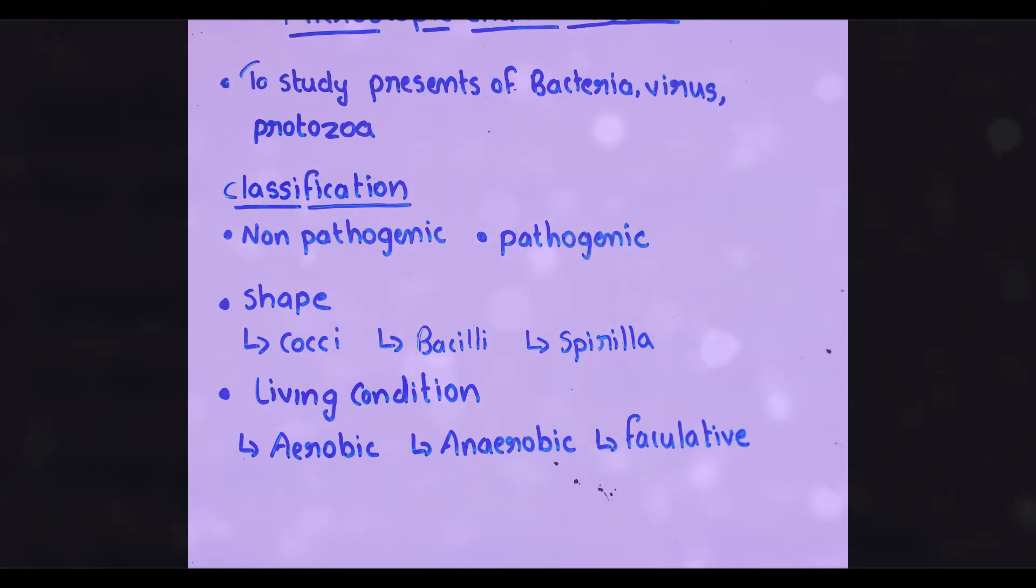Next classification is based on shape. First is Cocci - sphere shaped bacteria. Second is Bacilli - rod shaped bacteria. Spirilla is twisted rod shaped bacteria. Classification based on living condition: Aerobic bacteria survive in presence of oxygen. Anaerobic bacteria survive in absence of oxygen. Facultative bacteria survive both with or without oxygen.